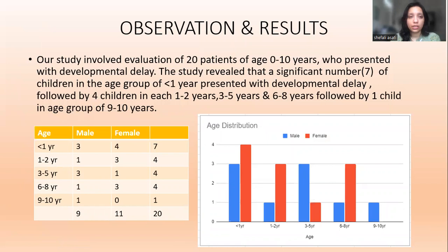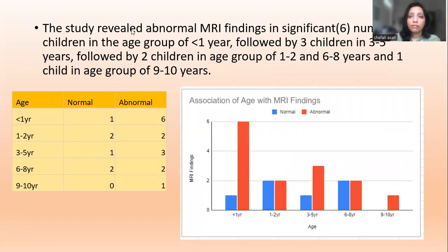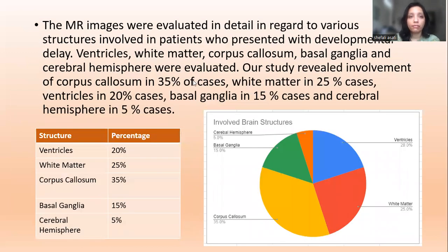Observations and Results. The study involved evaluation of 20 children aged 0–10 years with developmental delay. Seven children presented under 1 year; 4 each in the 1–2 years and 3–5 years groups; 4 in the 6–8 years group; and 1 child in the 9–10 years age group. Abnormal MRI findings were found in 6 children under 1 year, 3 in the 1–2 years group, 2 in the 6–8 years group, and 1 in the 9–10 years group. Among structures involved: corpus callosum in 35%, white matter in 25%, ventricles in 20%, and basal ganglia in 15% of cases.